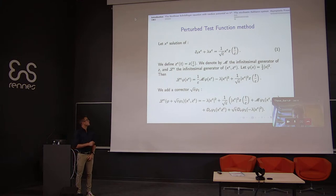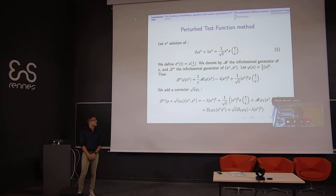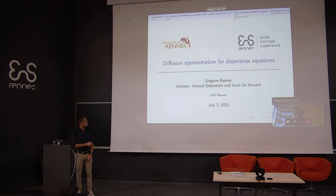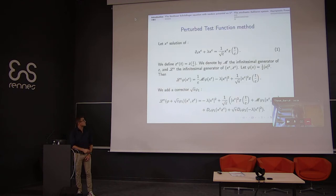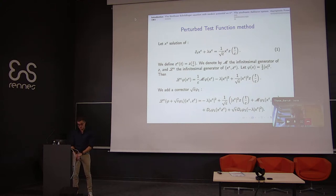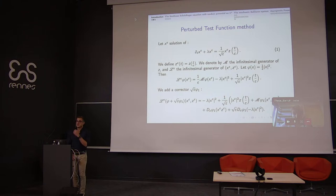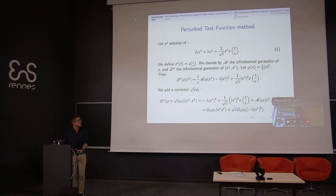We denote by z-epsilon the rescaled process z evaluated at t over epsilon. We will study the infinitesimal generator m of the process z, and L-epsilon, the infinitesimal generator of the couple (x-epsilon, z-epsilon). The infinitesimal generator is a good tool for this kind of process because it characterizes the law and is closely linked to the equation that satisfies our process.